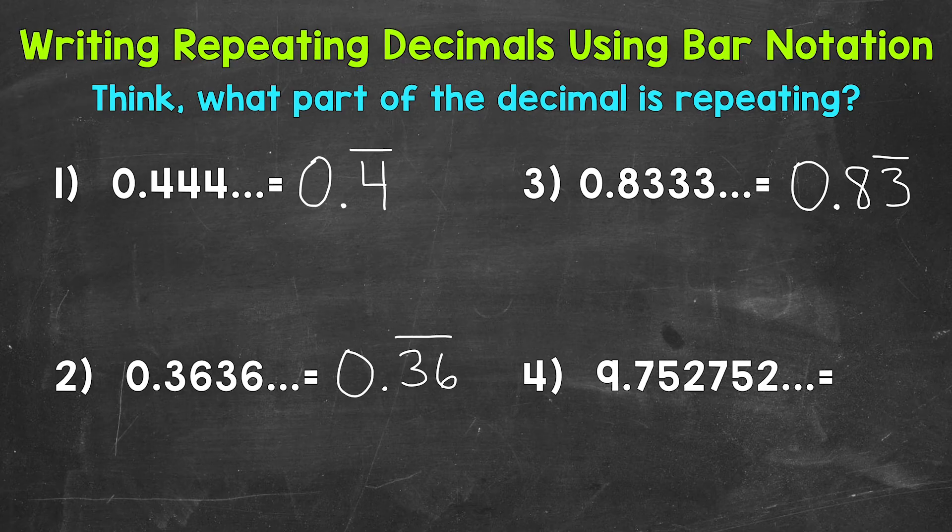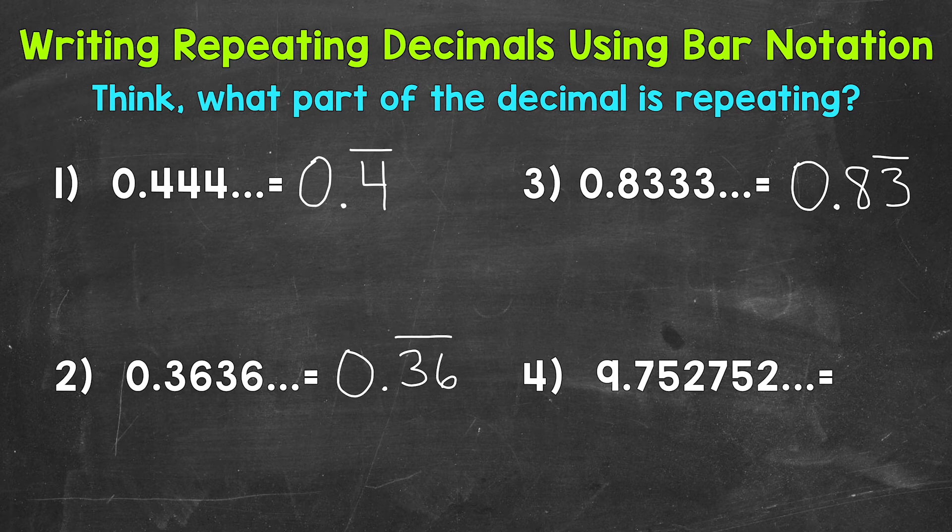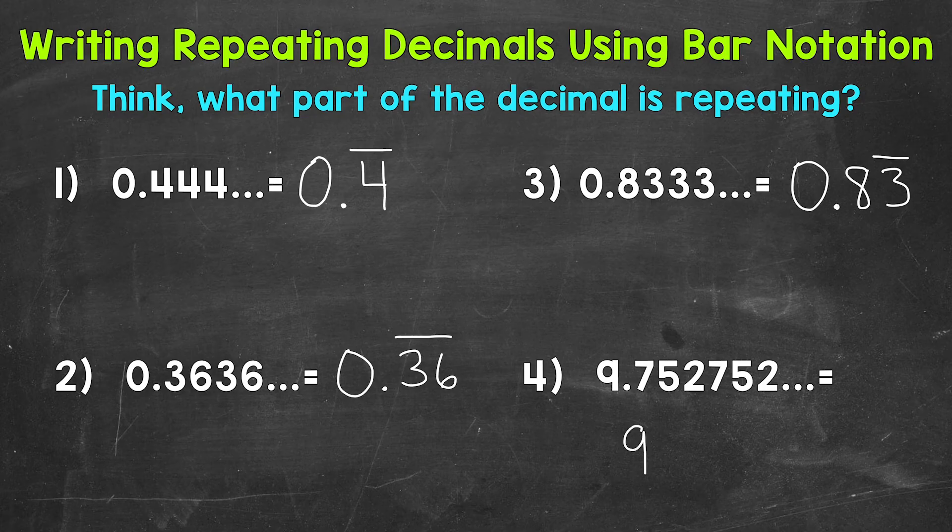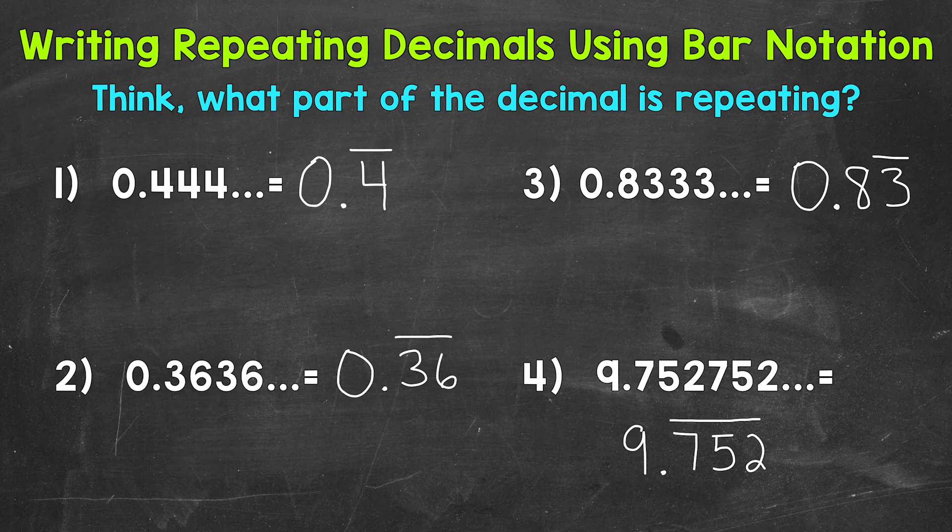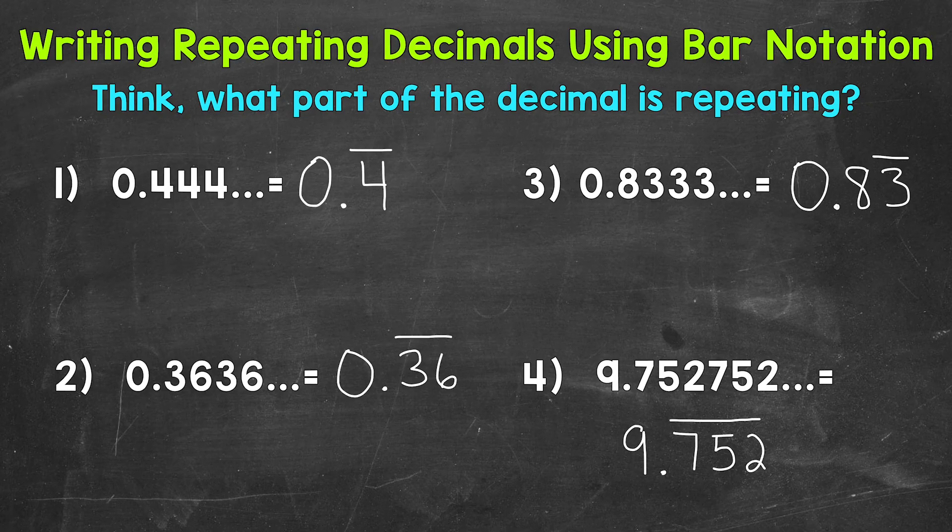And lastly, number four, we have 9.752752 repeating. I'm going to write this one underneath so I have enough room. We have three digits that repeat here: the 7, the 5, and the 2. So let's write our whole number of 9, decimal, 7, 5, 2, and we need a bar above that group of three digits because all three digits repeat. That's how you would write 9.752 repeating using bar notation.